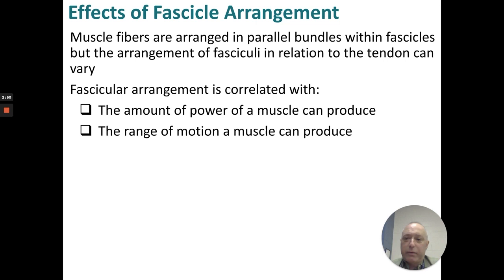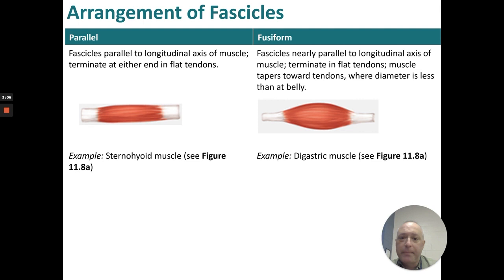Muscle is arranged in fascicles — these are muscle fibers in parallel bundles. The fascicular arrangement correlates with the amount of power the muscle can produce and the range of motion it can produce. The arrangement of fascicles can be parallel or fusiform. Parallel fascicles are parallel to the longitudinal axis of the muscle, with a flat tendon at either end — an example is the sternohyoid muscle. Fusiform, like the digastric, has a big belly; the fascicles are nearly parallel to the longitudinal axis but terminate on a flat tendon, with the diameter greatest at the belly.